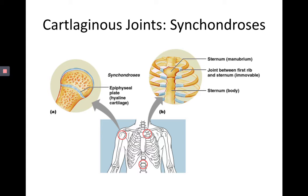We also have the cartilage holding our true ribs to the sternum, which is a synchondrosis — connecting bone to bone via hyaline cartilage specifically.